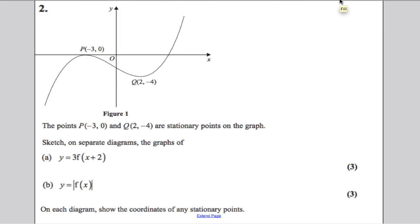This question shows us a graph and asks us to perform various transformations of that graph. On the original graph, we are given the point P which is negative 3, 0, it's a local maximum, and we're given the point Q which is 2, negative 4, which is a local minimum or they're both stationary points.